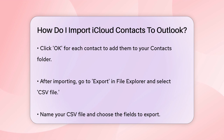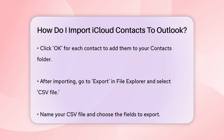After converting your contacts to a CSV file, open Outlook in your browser. Go to the People page, select Manage, and then Import Contacts. Browse for your CSV file, select it, and click Import.